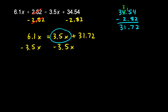Now, look right here. The 3.5x and the minus 3.5x, those add up to zero. So, those two terms cancel each other out. That leaves me with 31.72 on the right. I'm going to go ahead and write that. 31.72. That's all that's left on the right-hand side.